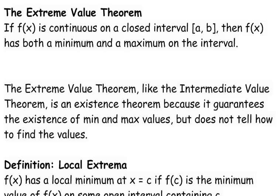The Extreme Value Theorem is like our Intermediate Value Theorem — we call it an existence theorem. What that means is that it guarantees the existence of something but it doesn't tell you how to find it. The IVT was used to show that a function equaled zero on an interval — if it was negative on one side and positive on the other, it had to hit zero somewhere in between, but it didn't tell us where. Same thing here: the Extreme Value Theorem doesn't tell us what the maximum and minimum values are; it just says that they exist.